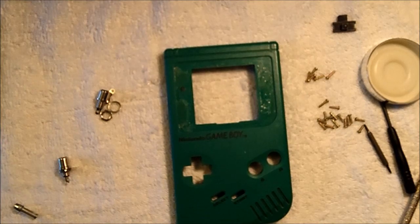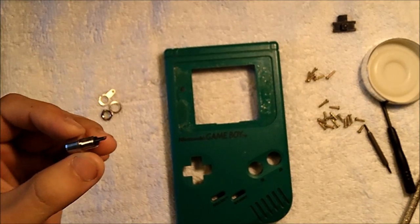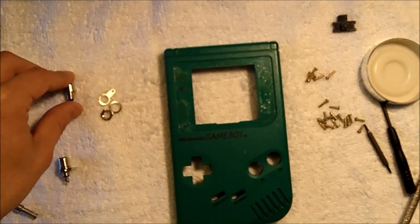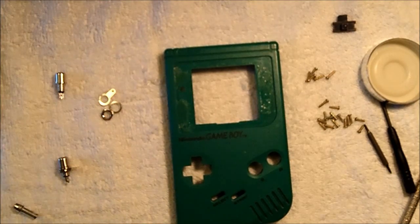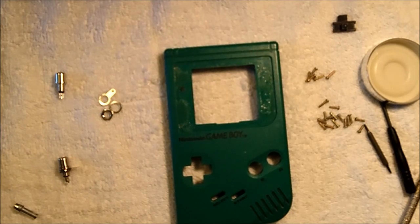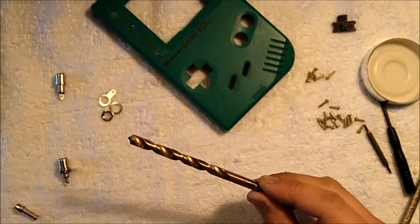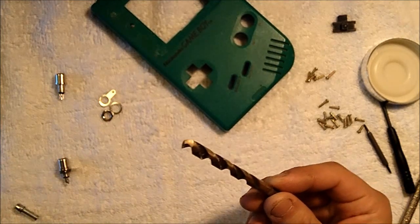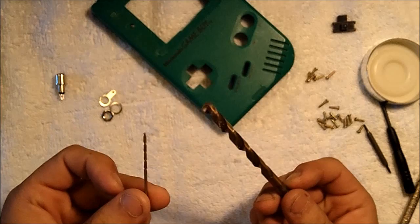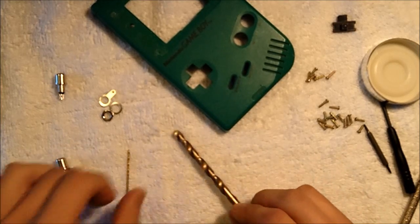The panel mount jacks, the RCA jacks, I've found that all the ones that I've used, you'll have to drill a hole about one quarter of an inch in diameter. So you'll be using a one fourth inch drill bit. What you'll want to do is you want to start out with a smaller drill bit. I like to use a one sixteenth drill bit and work my way up.